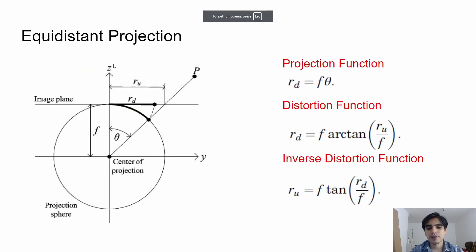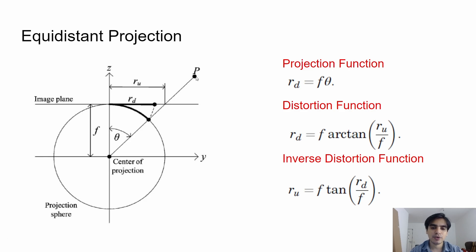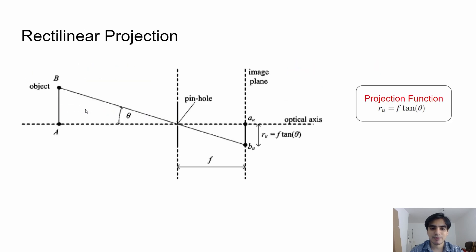The equidistant projection is used by most fisheye lenses to project objects from the 3D world onto the 2D image plane. It uses the concept of a projection sphere. When you take a picture, the light from an object travels in a straight line and hits the lens or the projection sphere. Each point is viewed from the center of the projection. The focal length is the distance between the reference axis and the image plane — the same concept as in a pinhole camera — and theta is the angle between the optical axis and the ray from the object.